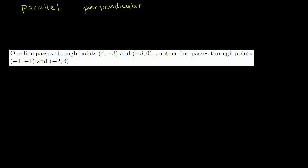Just as a bit of a review: parallel lines never intersect. If those are my coordinate axes — that's my x-axis, that is my y-axis — if this is a line drawn in magenta, a parallel line might look something like this. It's not the exact same line, but they have the exact same slope. If this change in y over change in x is a certain amount, the other line's change in y over change in x is the same amount. And that's why they never intersect.